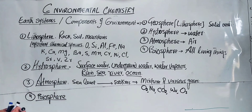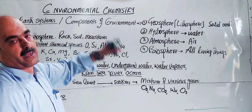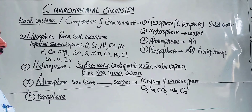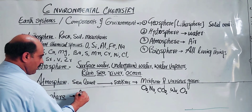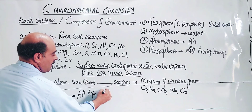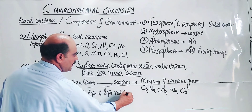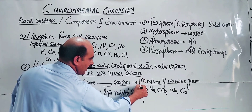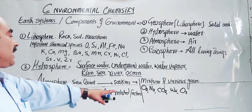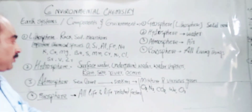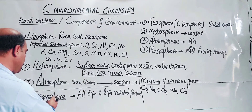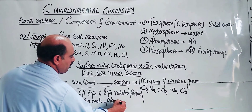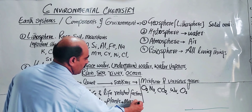The Biosphere — bio means life. The biosphere is the life component of the environment. It includes all life and life-related factors: all living things and the factors related to life, such as light and power. This includes animals, plants, and microorganisms — all are studied as part of the biosphere.